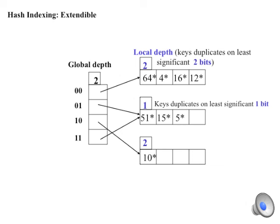The local depth of a bin indicates the number of least significant bits shared by all bin members. So all keys in the top bin agree in the two low-order bits, 0, 0 in this case.